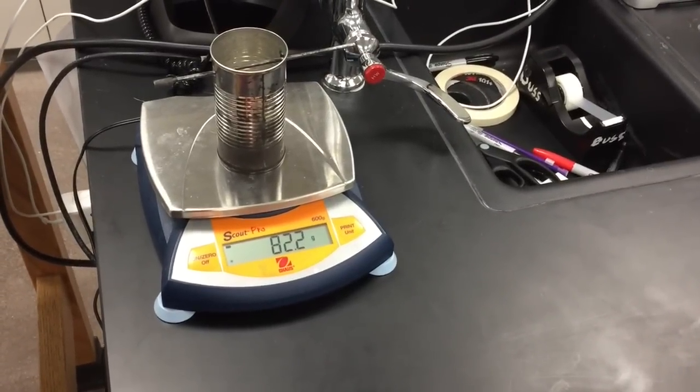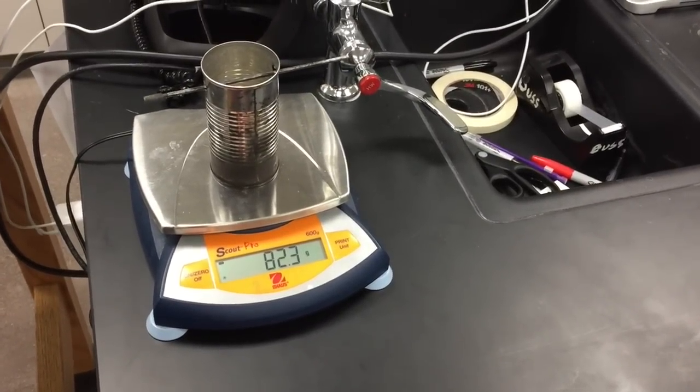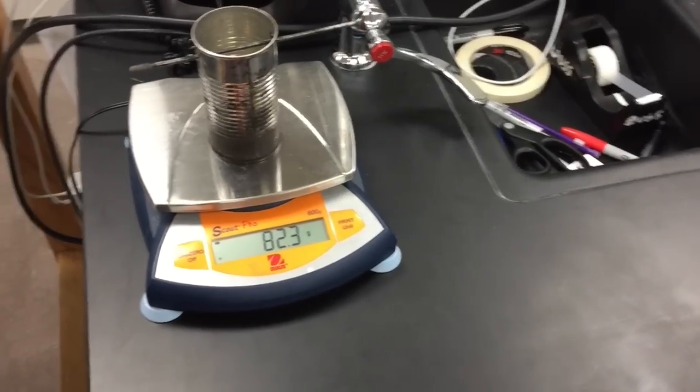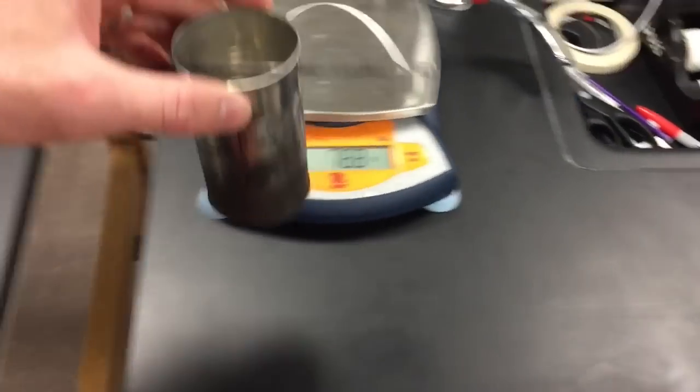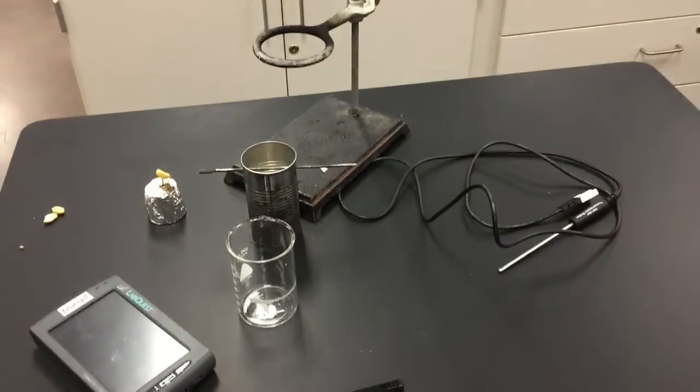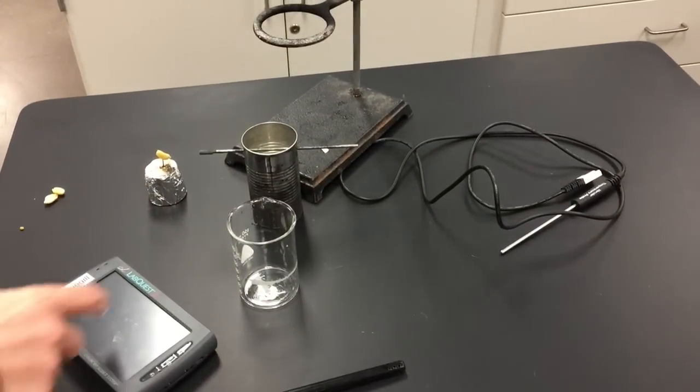Write down how much it weighs full, and then on your data table you just take the difference between what it weighs full and what it weighs empty, and that equals the weight of the water in grams. The last thing we need before we actually start the peanut on fire is what the temperature of the water is.